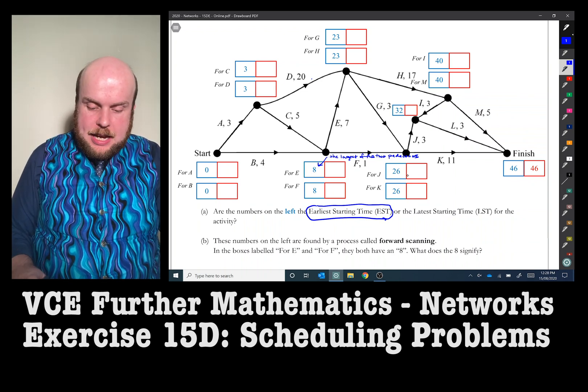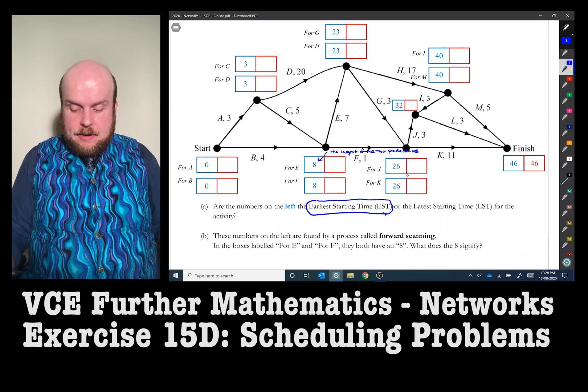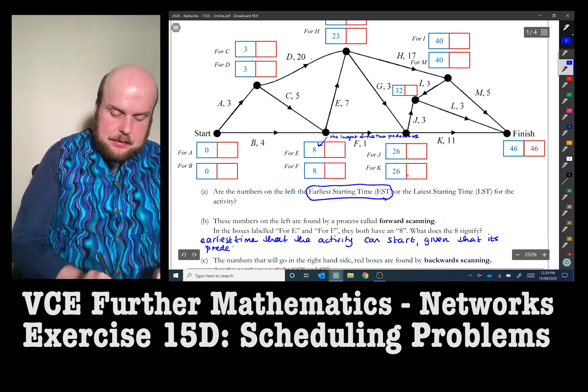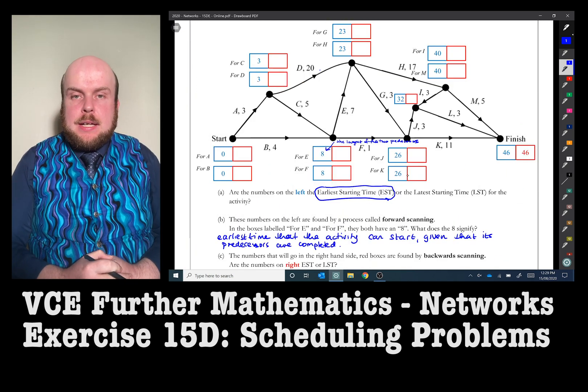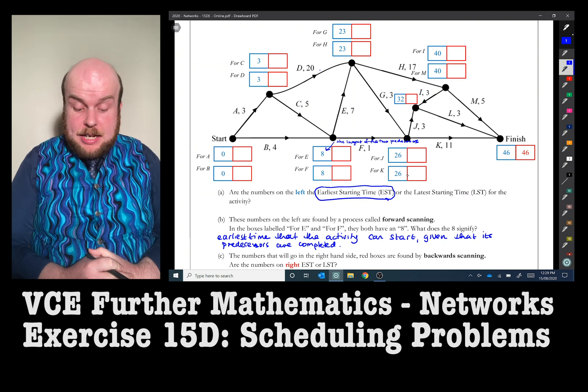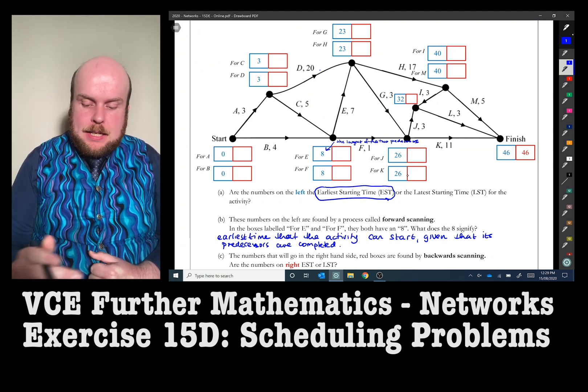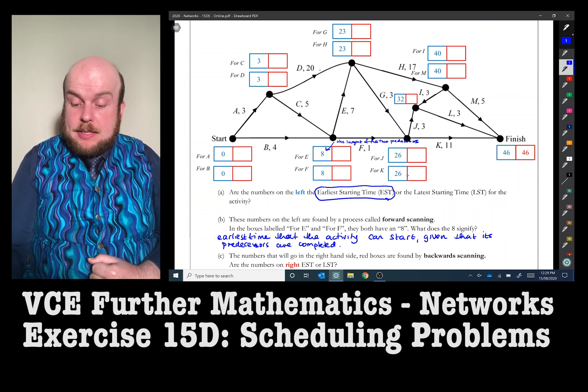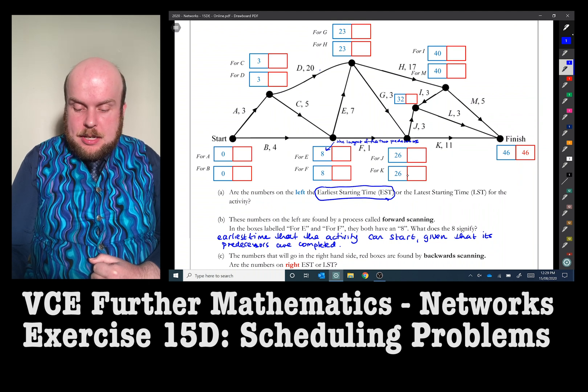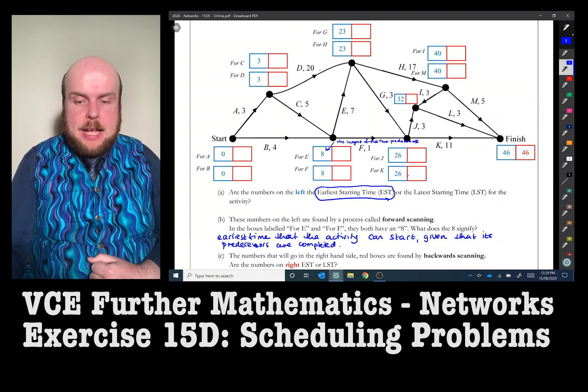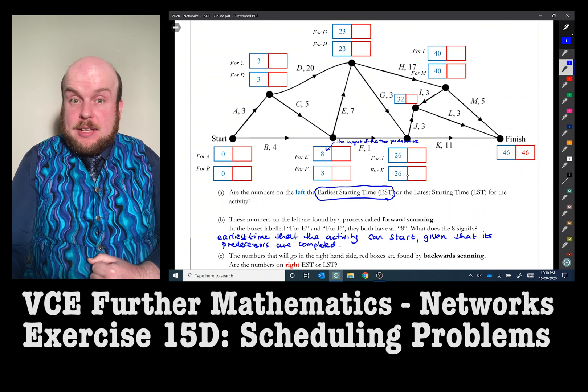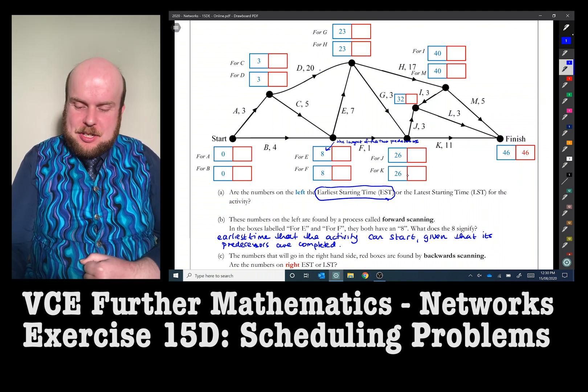So hopefully we can now see that what these numbers on the left signify. They are the earliest time that the activity can start given that its predecessors are completed. So when it gets to this, when we look at H for I and for M, the minimum time there says 40, because there's only one way we can get to I and to M, which is 40, because it's 23 plus 17, which is 40.